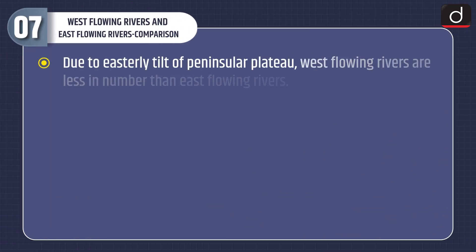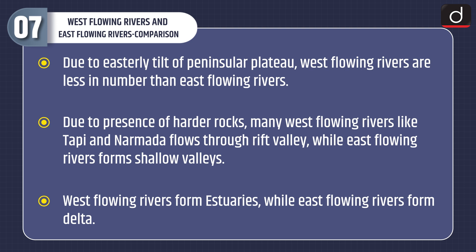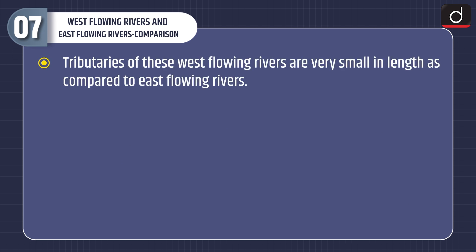Now let's discuss the comparison between west flowing and east flowing rivers. Due to the easterly tilt of the Peninsular Plateau, west flowing rivers are fewer in number than east flowing rivers. Due to the presence of harder rocks, many west flowing rivers like Tapi and Narmada flow through rift valleys, while east flowing rivers form shallow valleys. West flowing rivers form estuaries while east flowing rivers form deltas. Tributaries of west flowing rivers are very small in length compared to east flowing rivers.